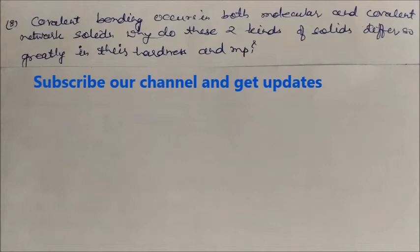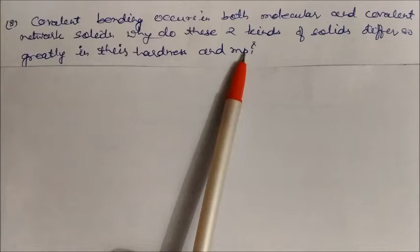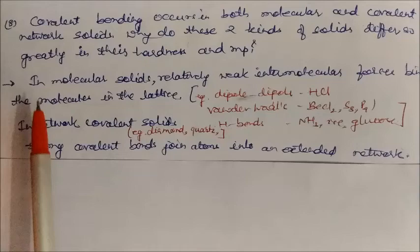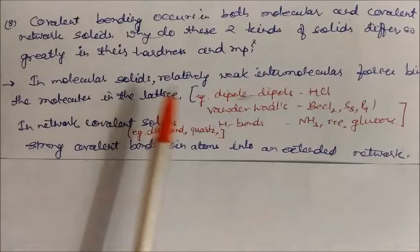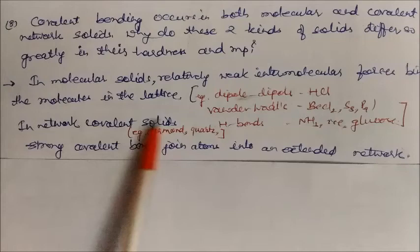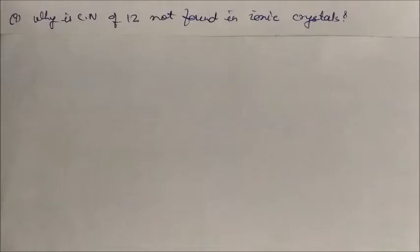Covalent bonding occurs in both molecular and covalent network solids. Why do these two kinds of solids differ so greatly in hardness and melting point? In molecular solids, weak intermolecular forces hold the molecules in the lattice — for example, dipole-dipole forces (as in NCl3, ammonia, ice, glucose) or van der Waals forces (as in BeCl2, sulfur, phosphorus). But in network covalent solids like diamond and quartz, strong covalent bonds join atoms in an extended network — that's why they have much higher melting points and hardness.